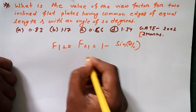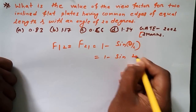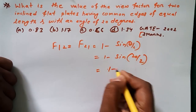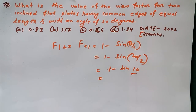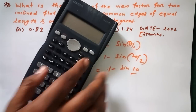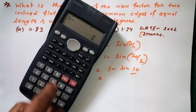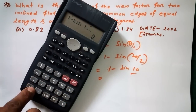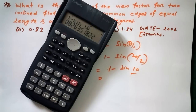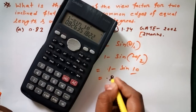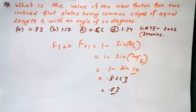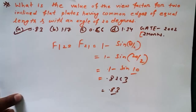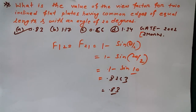For this case we have a simple formula: F12 = F21 = 1 − sin(θ/2). So: 1 − sin(20°/2) = 1 − sin(10°). Using a calculator: sin(10°) ≈ 0.1736, giving approximately 0.8263, which rounds to 0.83. So the answer is option A: 0.83.